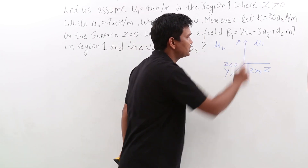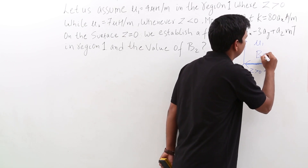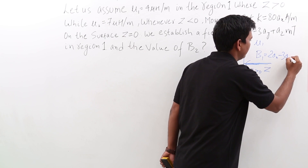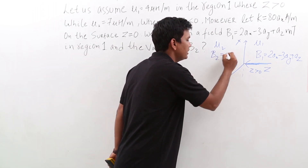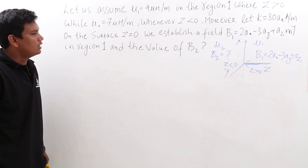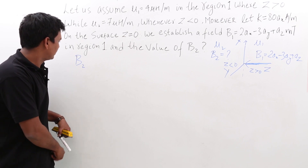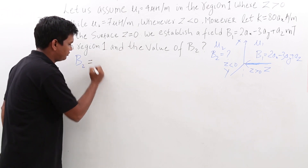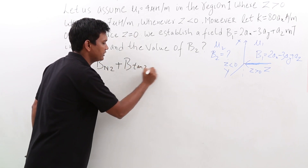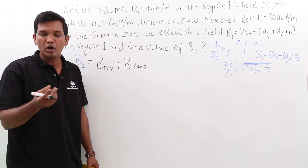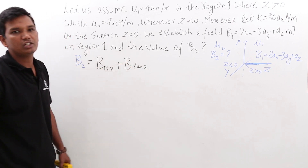The magnetic field B1 exists in region 1 and is given as 2 A_x minus 3 A_y plus A_z. To find B2, we note that any field can be broken down into a normal component and a tangential component. So B2 in region 2 is nothing but the normal component in region 2 plus the tangential component in region 2.